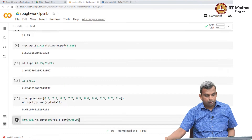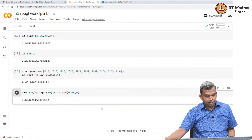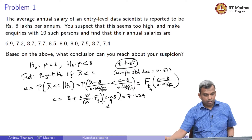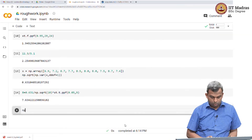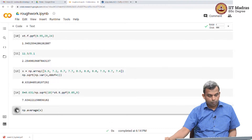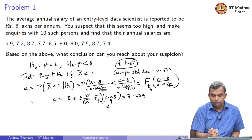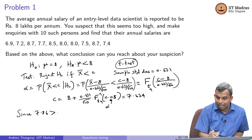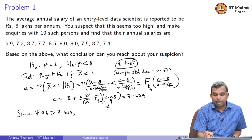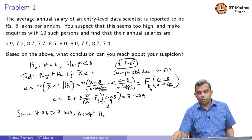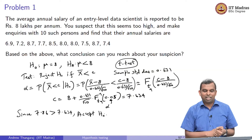So c = 7.634 at a significance level of 0.05. Now let us compute the sample mean using np.average of x, which gives 7.86. Since x̄ = 7.86 is greater than c = 7.634, and we reject H₀ only if x̄ is less than c, we end up accepting H₀. You put your suspicion aside — at the 0.05 significance level, you accept the null hypothesis and go with 8 lakhs per annum as the truth.